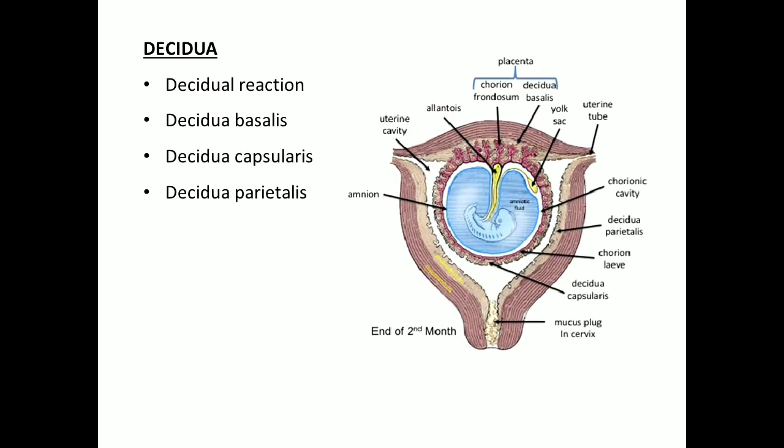The uterine endometrium after implantation of the embryo is called decidua. At decidua, decidual reaction happens — the stromal cells enlarge and become vacuolated, and glycogen and lipid are stored. This process is called decidual reaction. In the decidua we have three types: decidua basalis, decidua capsularis, and decidua parietalis.